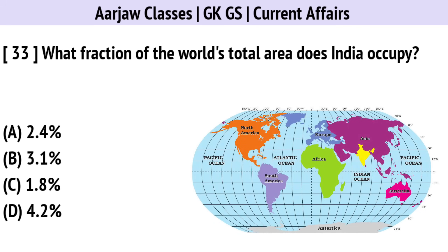What fraction of the world's total area does India occupy? The correct option is A — 2.4%.